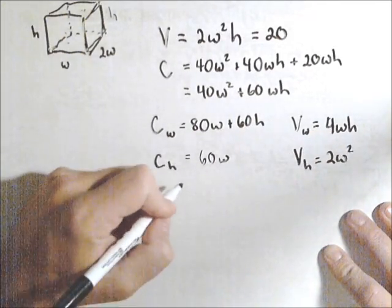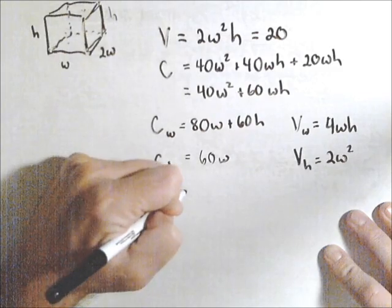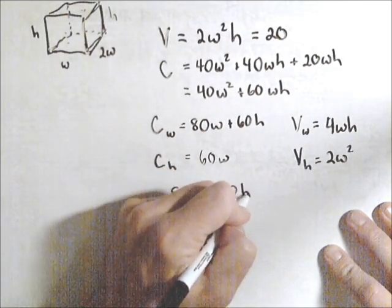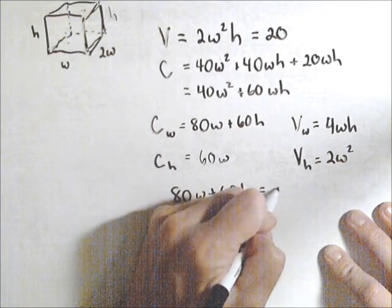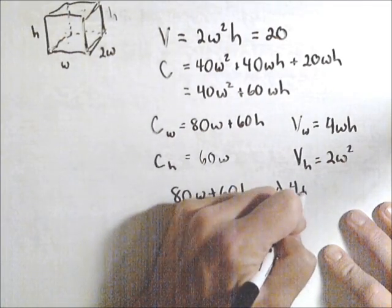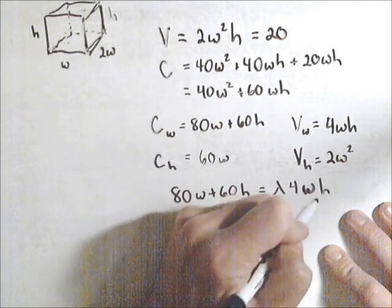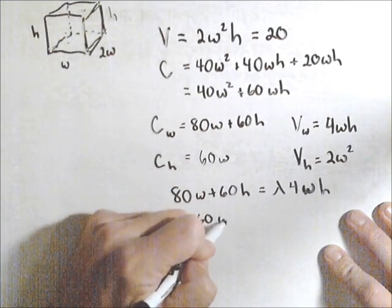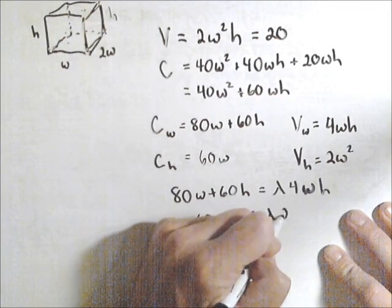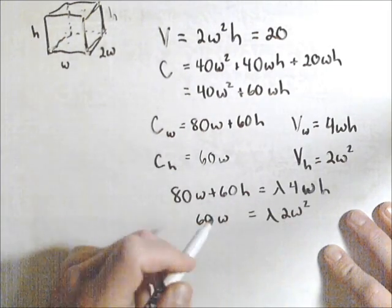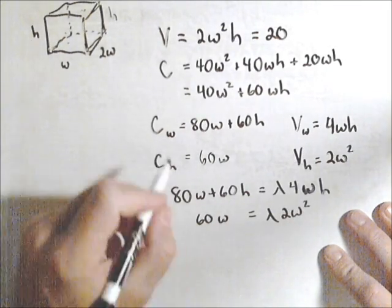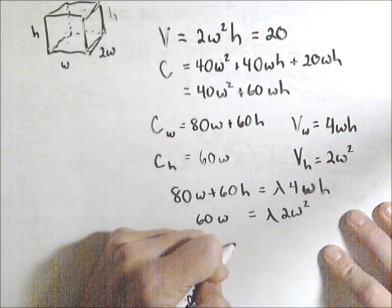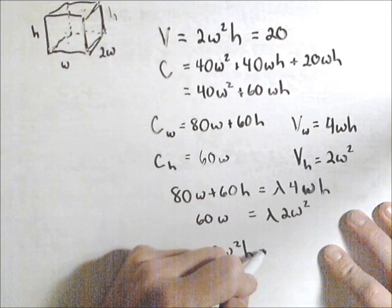So we'll set up our system. We have 80W plus 60H equals lambda times 4WH, and the next one is going to be 60W equals lambda times 2W². And our last one is our constraint, which is that we know that 2W²H must equal 20.